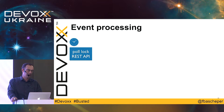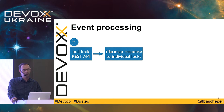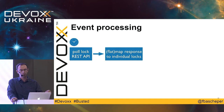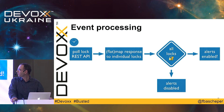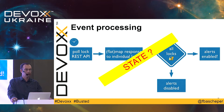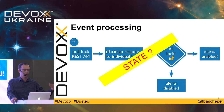For the lock, I have this poll lock API that gives an update every minute. I'm basically flat-mapping the response to the individual locks, since you can have more than one. I flat-map the JSON response to the individual lock status. If all locks are locked, I want to receive alerts and the alerting feature is enabled; otherwise, the alerting feature will be disabled. But there's a slight problem because you need state — when a new camera image comes in, I need to know what state the alerts-enabled flag has at that time.